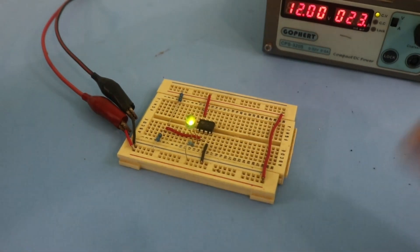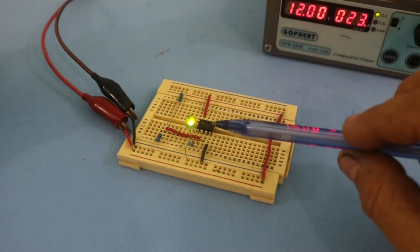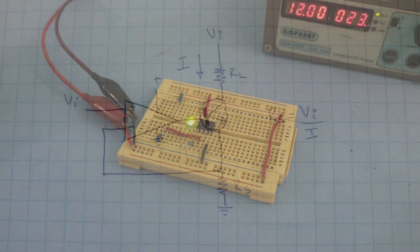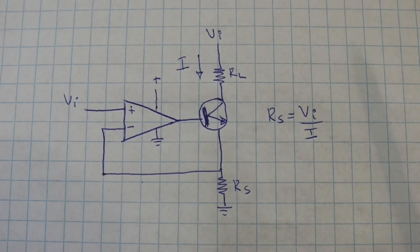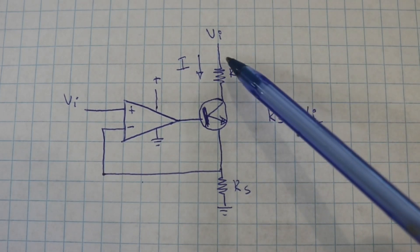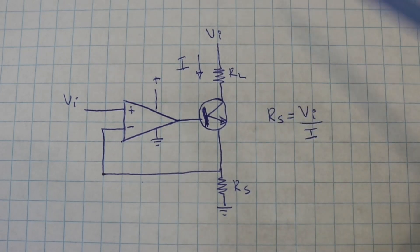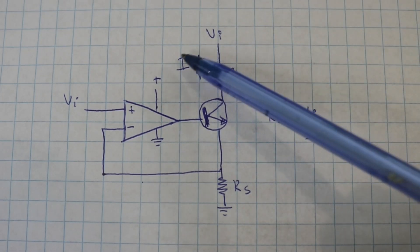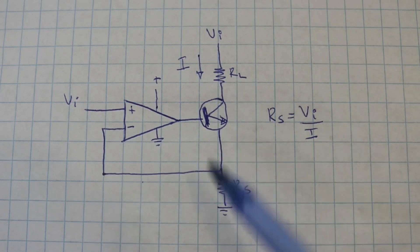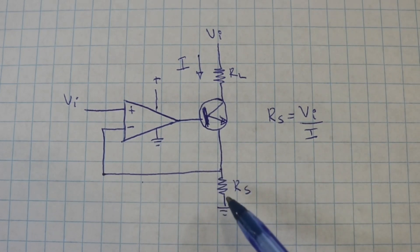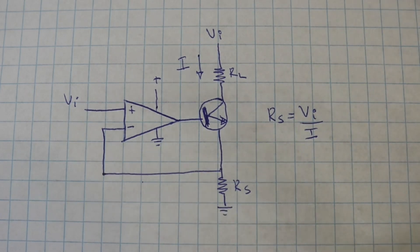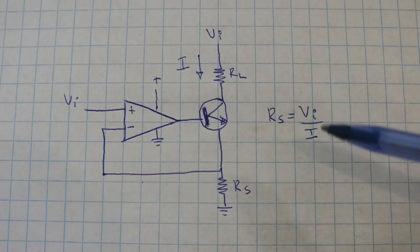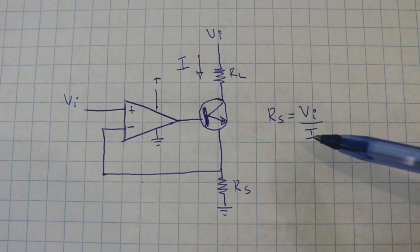If we need a higher current, then we must add a transistor to the circuit. Here is the circuit modified with a transistor — this is the device that we want to drive with a current I, and we put this resistor RS, and the value is given by the input voltage divided by the current that we need.